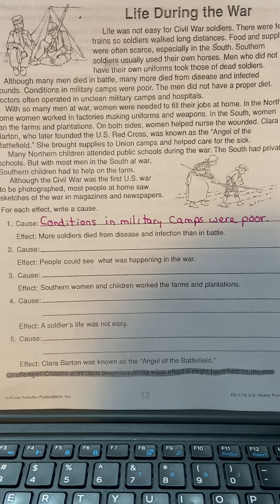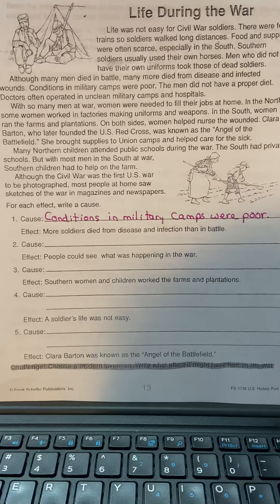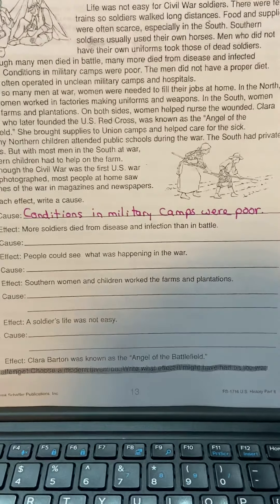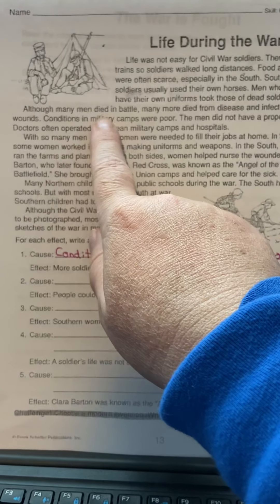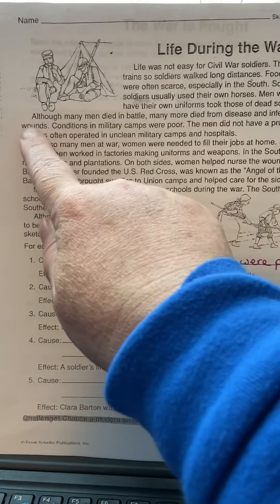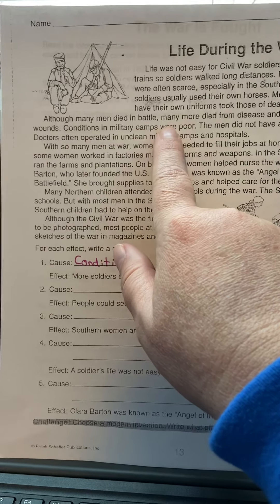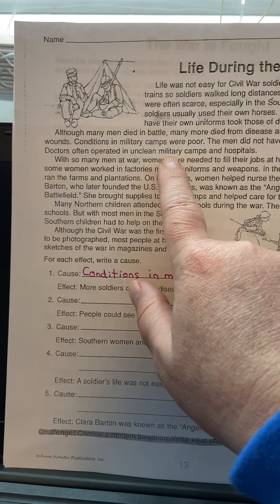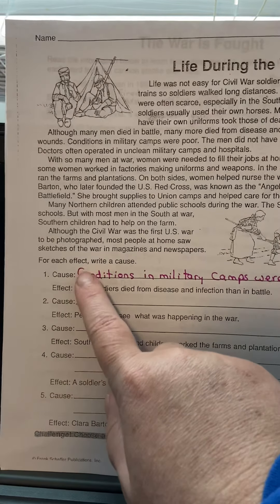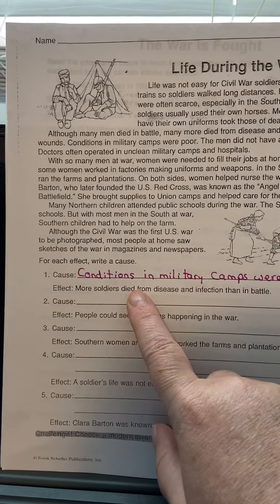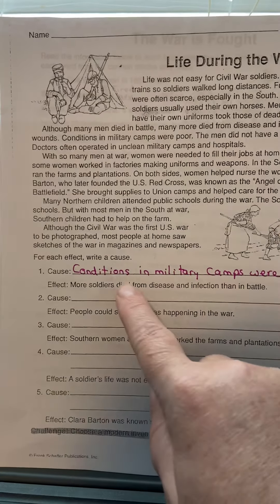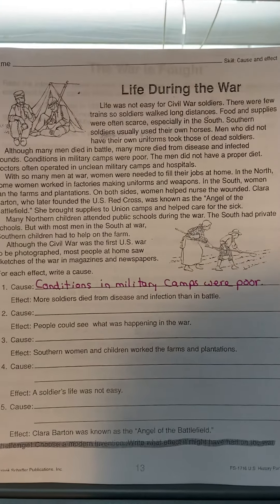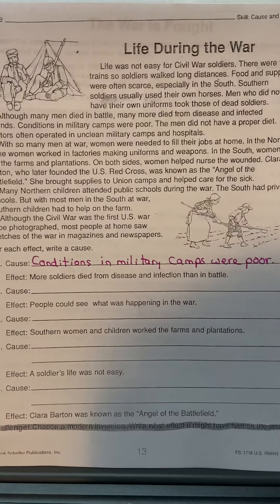Now you have five effects and you have to figure out the cause — what caused those effects. Number one says more soldiers died from disease and infection than in battle. The passage says conditions in military camps were poor, the men did not have a proper diet, and doctors often operated in unclean military camps and hospitals. So the effect is more soldiers died from disease and infection than in battle — the cause is that conditions in the military camps were poor. You will read the rest of the effects and go back into the passage to find the cause.